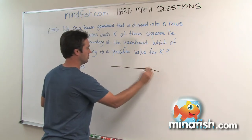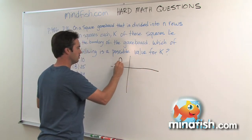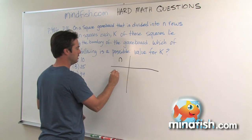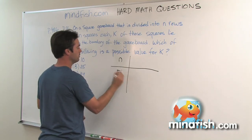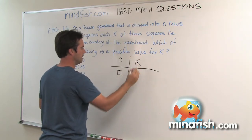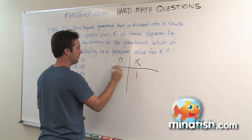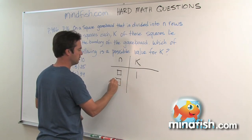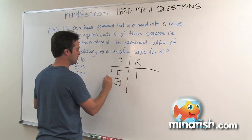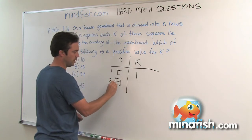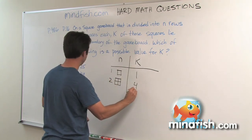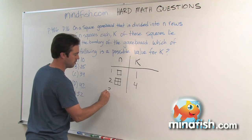So we're basically going to just make a little chart. We'll start with n is 1 and k is going to be 1. If n is 2, so you can see that there are 2 by 2, then k is going to be 4.